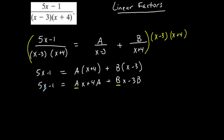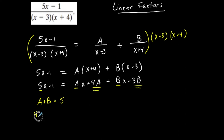I'm going to compare my x coefficients. On the right-hand side I have A and B both in front of x's, and on the left-hand side I have 5. So A plus B must equal 5. For the constant terms, I have 4A and negative 3B, and these must equal negative 1. That creates a system of two equations with two variables, A and B.